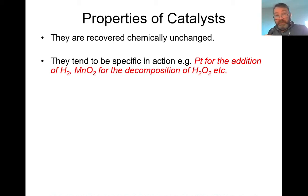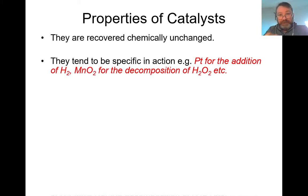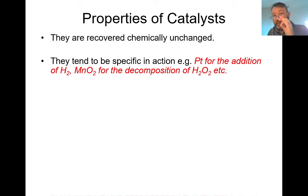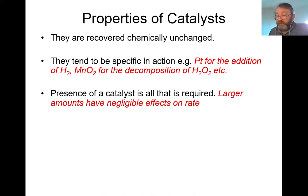Catalysts tend to be very specific in their action. Platinum, when we get to organic chemistry, is the metal that allows the addition of hydrogen onto organic substances. Nickel might do it as well, but not as well as platinum. Manganese dioxide is added to hydrogen peroxide to decompose it - that's its one job. The presence of a catalyst is all that is required; larger amounts have negligible effects on the rate. The very first addition of catalyst is where we notice the greatest change in reaction rate.